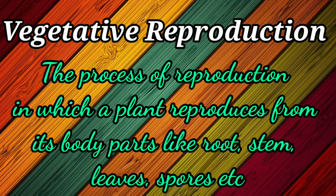Vegetative reproduction is the process of reproduction in which a plant reproduces from its body parts like roots, stem, leaves, spores, etc.